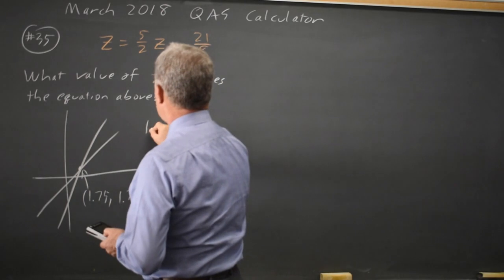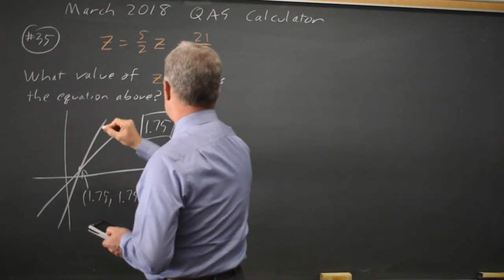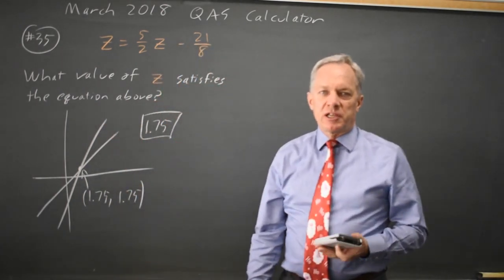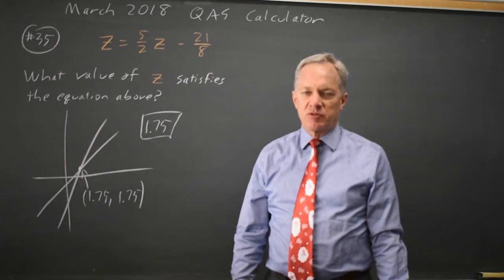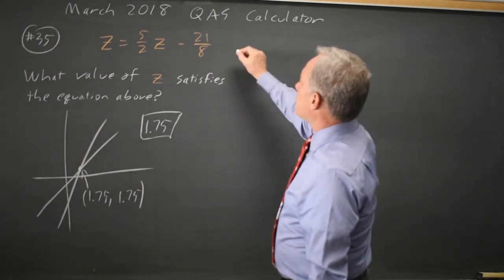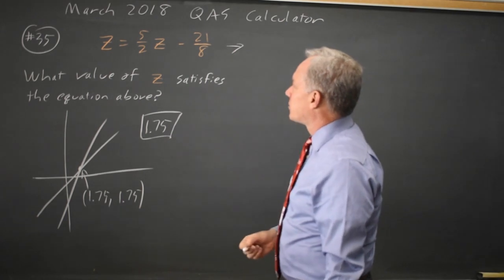So the solution is 1.75. The graphing calculator is fabulous for solving equations that only have one variable. Let's approach this by hand though, or the way I would without a graphing calculator.